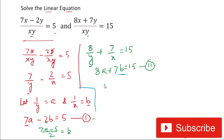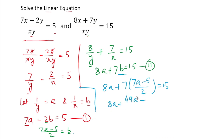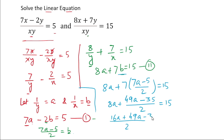Now in equation 2 we will put the value of b. That will be 8a plus 7 multiplied by (7a minus 5) divided by 2 is equal to 15. Now we will simplify: 8a plus (49a minus 35) divided by 2 is equal to 15. Taking LCM of 2, this becomes 16a plus 49a minus 35 divided by 2 is equal to 15, giving us 65a minus 35 divided by 2 is equal to 15.